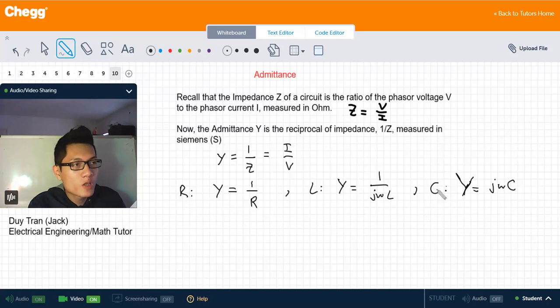Similarly, for the capacitor the admittance is jωC. We can also represent this formula in complex quantities as Y equals G plus jB.